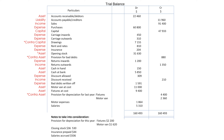Motor expenses — expense. Salaries — expense. Provision for depreciation for this year — expense. Closing stock — asset. Insurance prepaid — asset. Salaries accrued — liability.